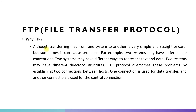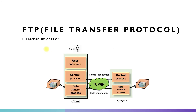FTP protocol overcomes these problems by establishing two connections between hosts. One connection is used for data transfer and another connection is used for control. So there are two parts: first one is data, and second one is control — the mechanism of FTP File Transfer Protocol.